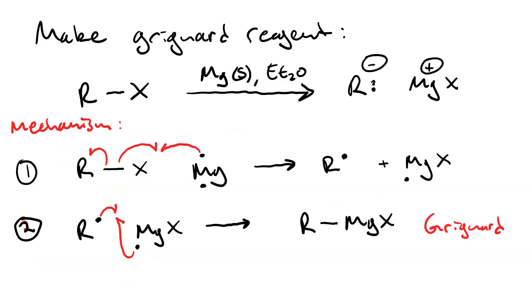We now have our Grignard Reagent, which has its resonance structure where that pair of electrons bonding the alkane to the magnesium turns into a lone pair. You've got your carbanion and your magnesium halide cation, and that is your nucleophile.